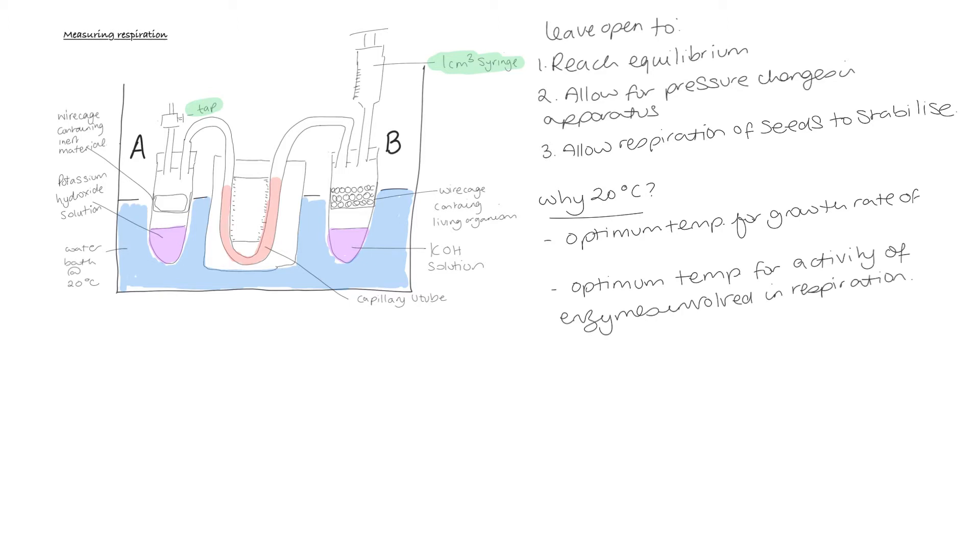So, what would we actually expect to see happen once the experiment started? Well, we would expect the seeds to perform respiration. So, we would expect the organism in tube B to perform respiration, and no respiration to be occurring in tube A. Because the potassium hydroxide absorbs any carbon dioxide produced, over time, the seeds will be absorbing oxygen from the air in their environment. Any carbon dioxide they give out will be being absorbed by the potassium hydroxide, and therefore, the volume of gas in the area of tube B will decrease, and so the pressure in tube B will decrease.